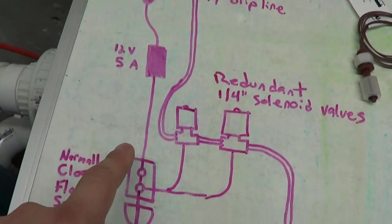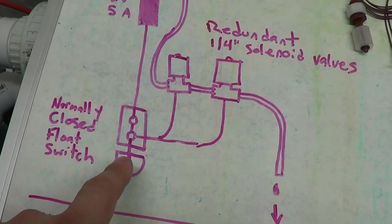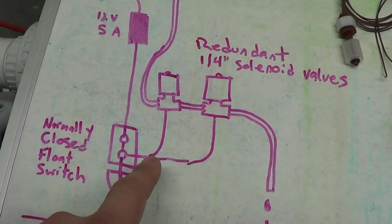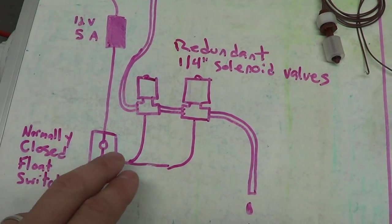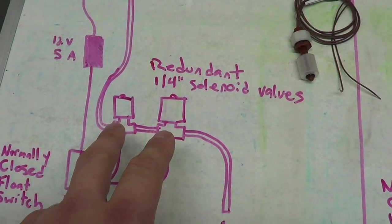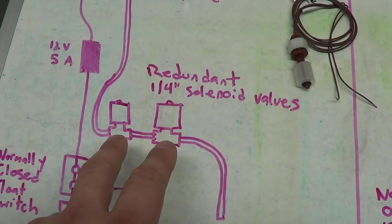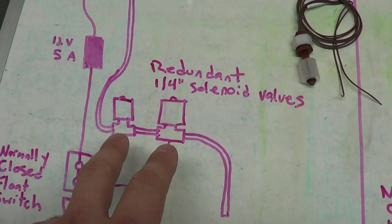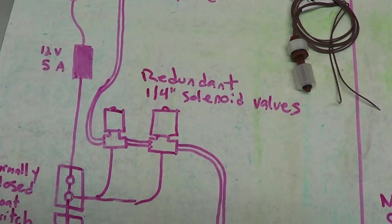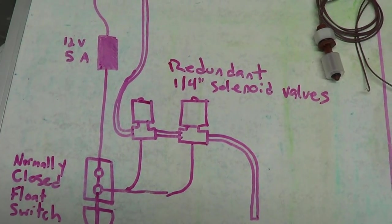All right, so as long as the power is on and as long as the water level is low, there's going to be power going through this circuit. And then that will feed into two solenoid valves, quarter inch solenoid valves, and the power going to those valves is what's going to keep those solenoids open.